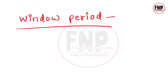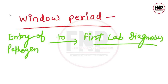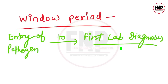Window period kya hota hai? Jab kisi person mein koi disease-causing pathogen enter ho jaye, wahan se lekar disease ke lab mein diagnose hone tak ka jo samay hai, wo window period kehlaata hai. Pathogen entry ke baad body antibodies banaati hai, aur in antibodies ko lab test dwara identify karke disease confirm ki jaati hai. Entry se identification tak ka samay window period hai.